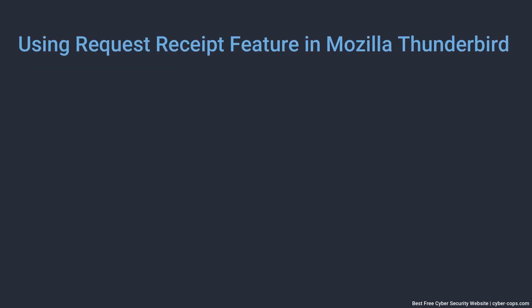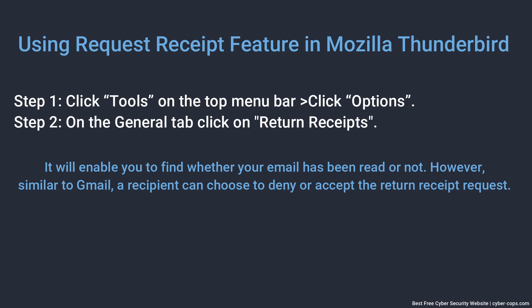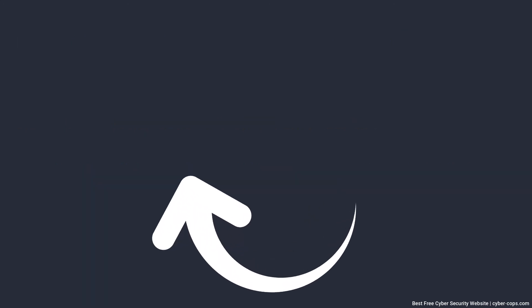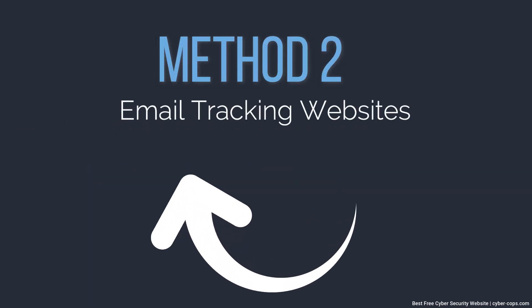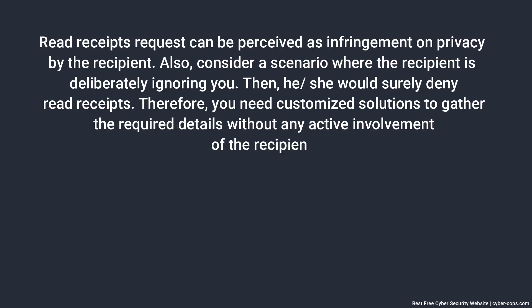To use the request receipt feature in Mozilla Thunderbird: Step 1, click Tools on the top menu bar, then click Options. Step 2, on the General tab, click on Return Receipts. This will enable you to find whether your email has been read or not.